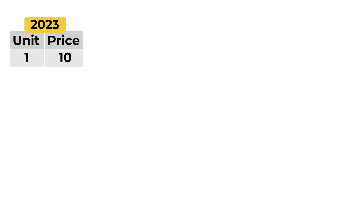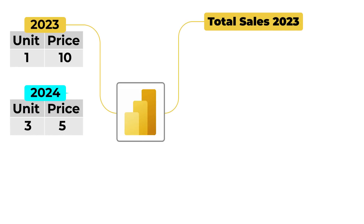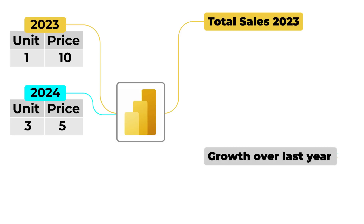Let's say you're working with some sales data belonging to 2023. You load the data in Power BI, create a few calculations — maybe a total sales calculation — and you're good to go. Then 2024 comes along and you load another data as a separate table in Power BI. Now you have two different tables: one for 2023 and another sales table for 2024.